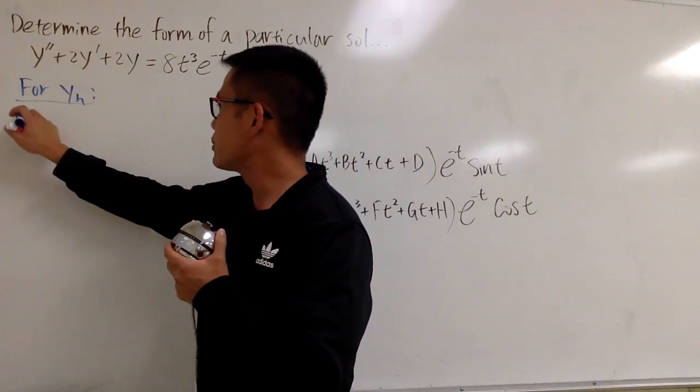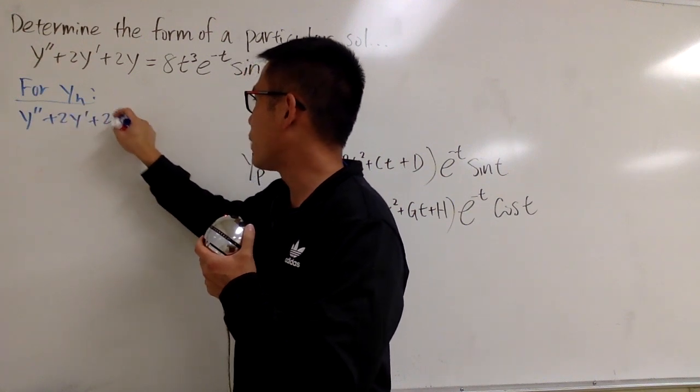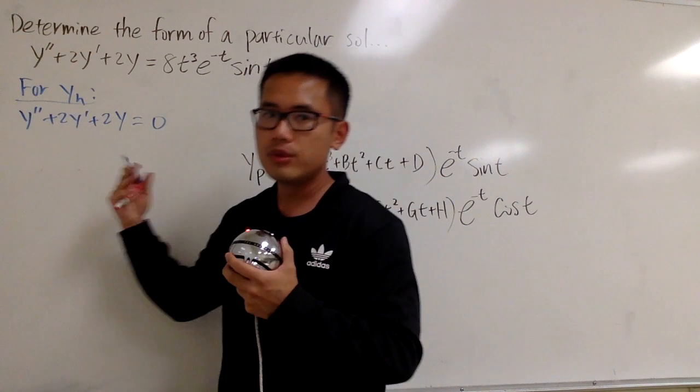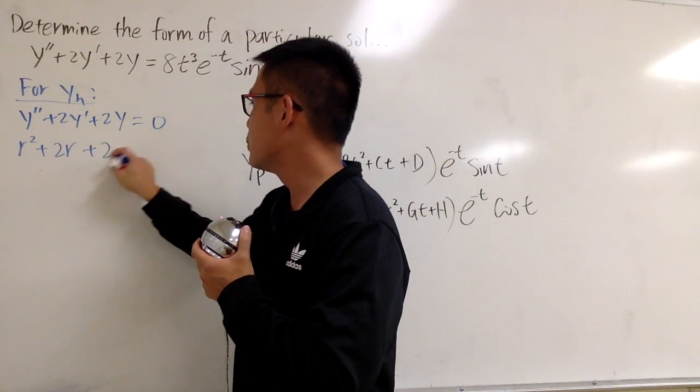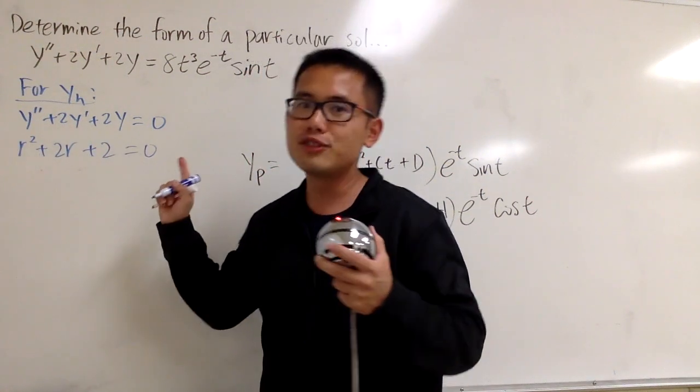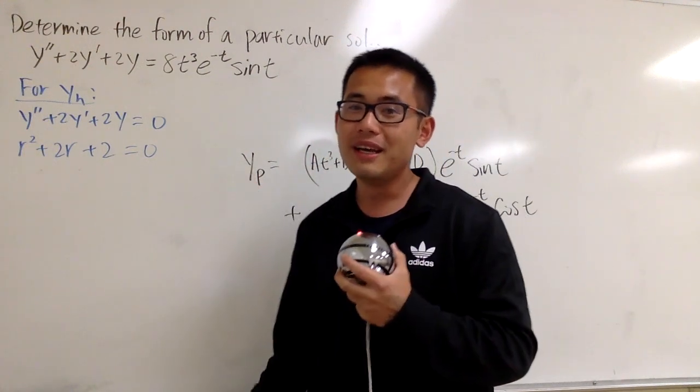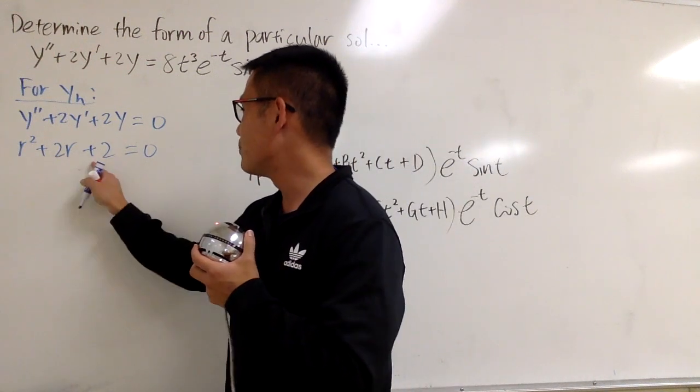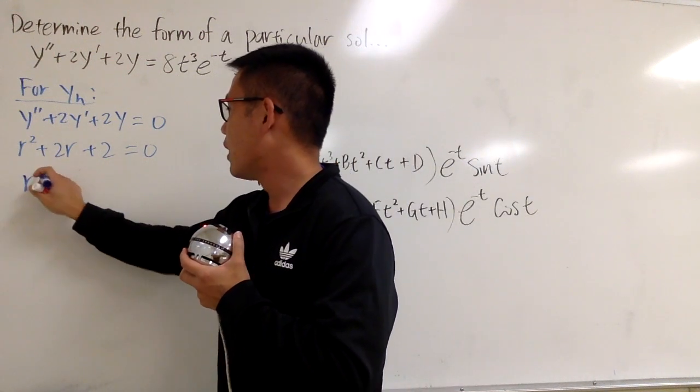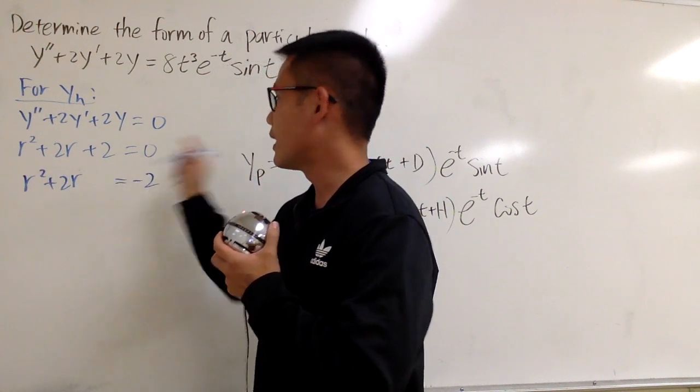Alright, so right here, I'm just going to look at the equation as y double prime plus 2y prime plus 2y being 0. And we change this into r squared plus 2r plus 2 equal to 0. And I have to show you guys a lot of this already by using the quadratic formula. So allow me to just complete the square right here for you guys. So I'm just going to go ahead and move the 2 to the other side. So we have r squared plus 2r, leave the space, and this is equal to negative 2.